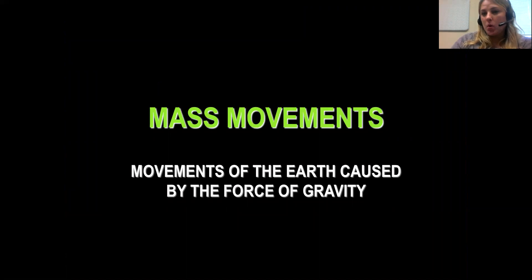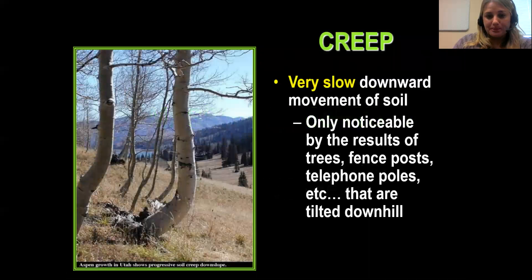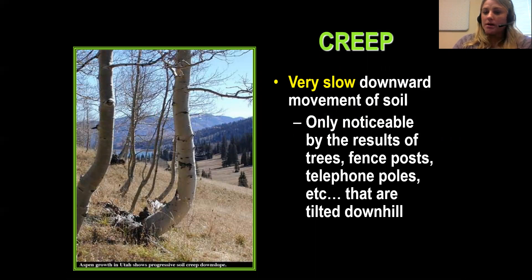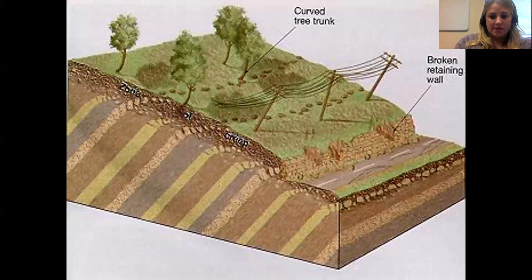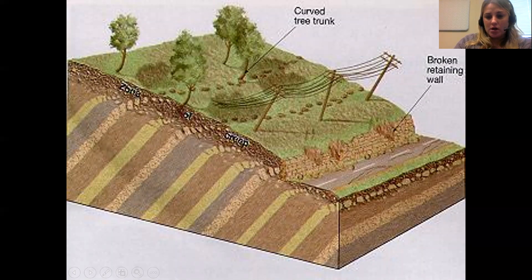Now let's talk about mass movements, which is the movement of soil due to the force of gravity. The first type is called a creep. A creep is very slow — you won't be able to notice it with your naked eye, but you'll notice it through landmarks like trees, fence posts, and telephone poles that appear tilted downward. That's because the soil is slowly moving down the side of a mountain or hill due to gravity. You can see it by the curvature of tree trunks or poles that look like they might be falling over.